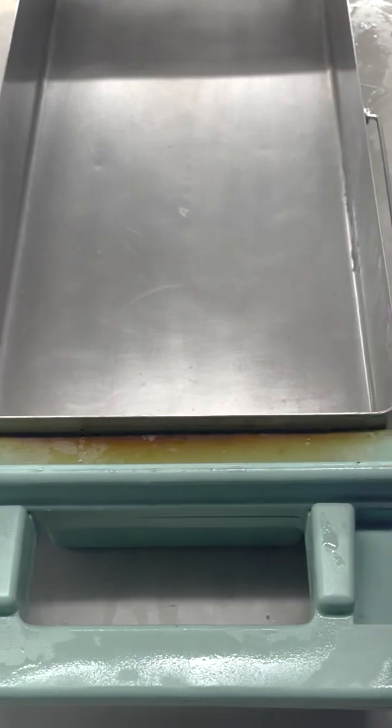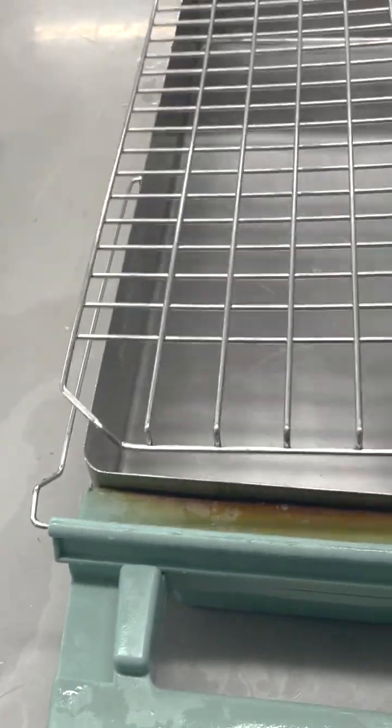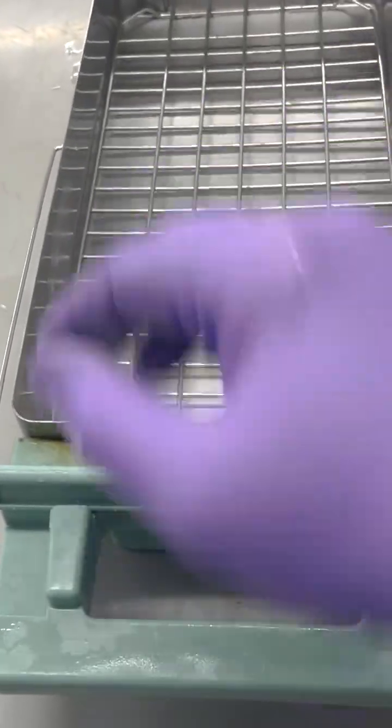You can take a damp wet cloth and wipe these down afterwards. Once you rinse it nice and clean, just repeat the same step on your lid there and you're good to go. Thank you.